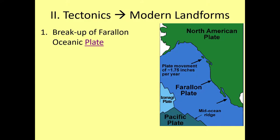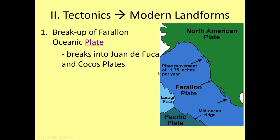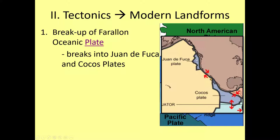The breakup of the Farallon Plate separated it into the Juan de Fuca Plate to the north and the Cocos Plate to the south. Juan de Fuca is going to create the Cascades and the San Andreas Fault. The Cocos Plate creates Baja California.